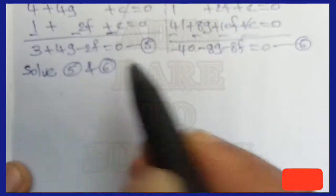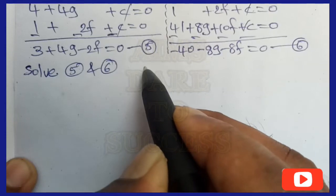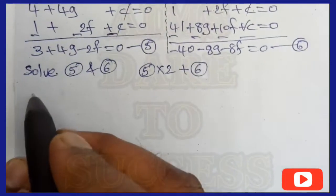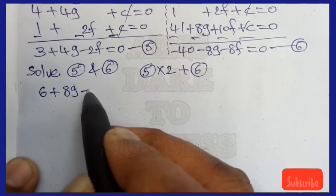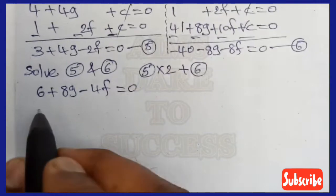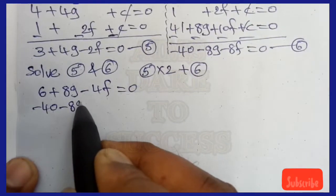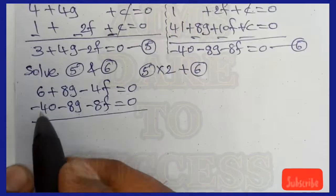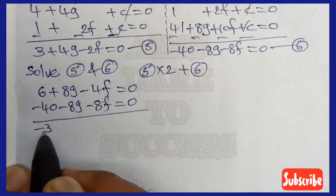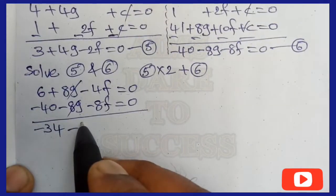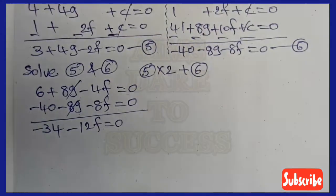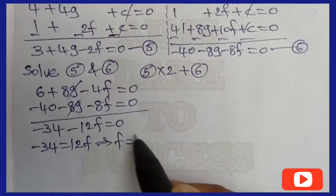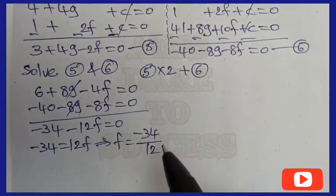Now solve Equations 5 and 6. Since the coefficients of g and f are not the same, multiply Equation 5 by 2: 6 + 8g − 4f = 0. Adding to Equation 6 (−40 − 8g − 8f = 0): the 8g terms cancel, leaving 6 − 40 − 4f − 8f = 0, so −34 − 12f = 0, giving 12f = −34.